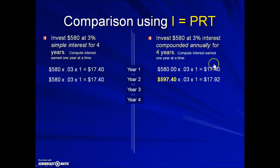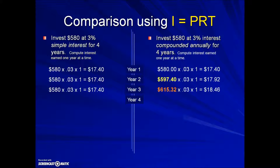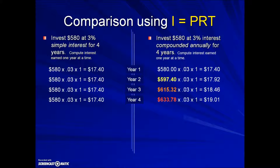On the compound interest side, the interest from the first year is accrued to the previous principal balance. Because the amount is higher when you calculate the interest, we have a gain of about fifty cents. Each year the same thing happens — on the simple interest side, no change. On the compound interest side, because the second year's interest was added on, we have a larger principal to calculate with, and we're up over a dollar from the first year. By the fourth year, compound interest has the balance up to six hundred thirty-three dollars and seventy-eight cents acting as the principal, so each year the interest earned is that much higher.